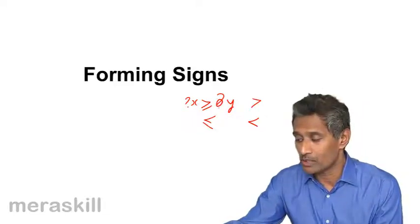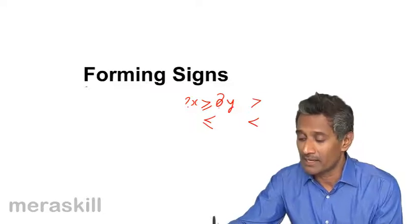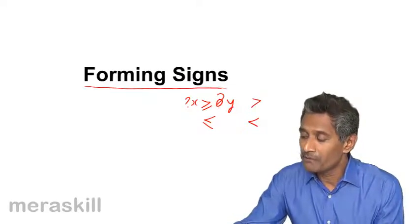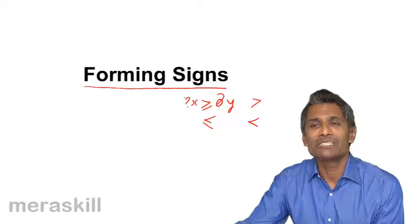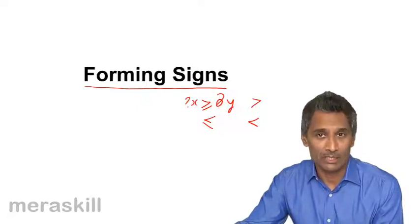Since it's an inequality, we take into account this. So basically forming signs would mean finding out the corresponding region which satisfies that particular inequation.